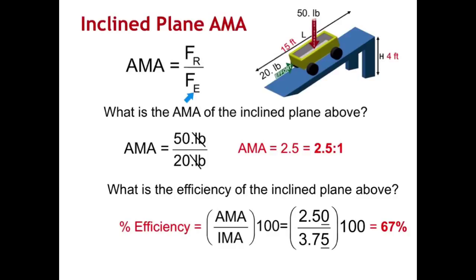My force of my effort is going to be the effort put into moving this cart. So I have put in 20 point pounds. Again, that decimal is there to indicate that this zero is significant. So AMA equals my force resistance, 50 pounds, divided by my force effort, which was 20 pounds. You plug it into the calculator, and AMA equals 2.5.